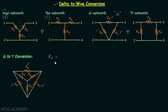R1 is equal to RA multiplied by RB, divided by the sum of all three resistors in the delta network — that is, RA plus RB plus RC. In the denominator we have the sum of all three resistances, and in the numerator we have the product of the resistances present on the left and right side of R1, which are RA and RB.